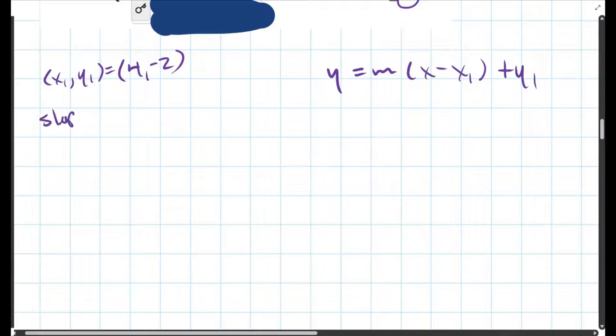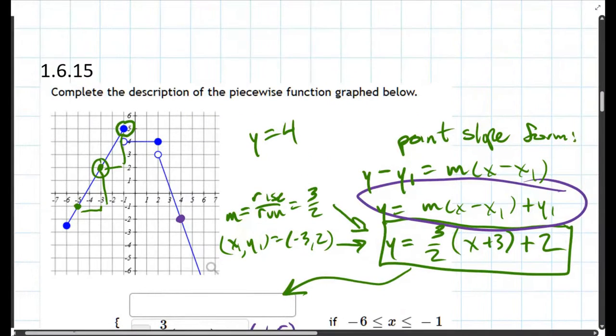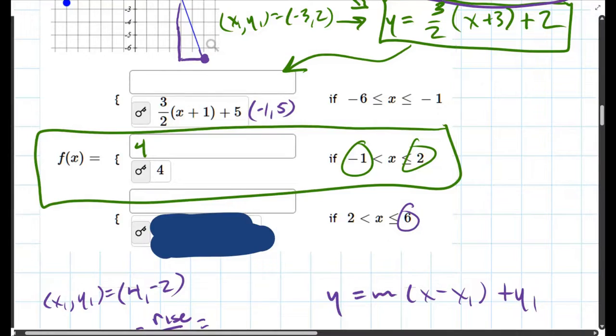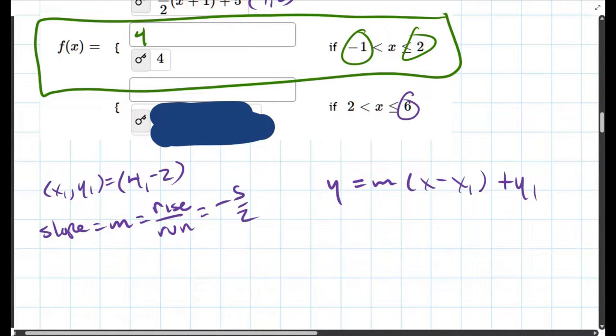Slope. Remember, this is rise over run. So how much are we going up and over? We only have two points here. We're not going up. We're going down five from three to negative two and over two. Now, technically, I could go down five and over two, and I should be right at that point there. And if you look at, it looks like that would be the point where we'd stop on. So we're going rise negative five, run two. So it's negative five halves and ready to plug everything in.